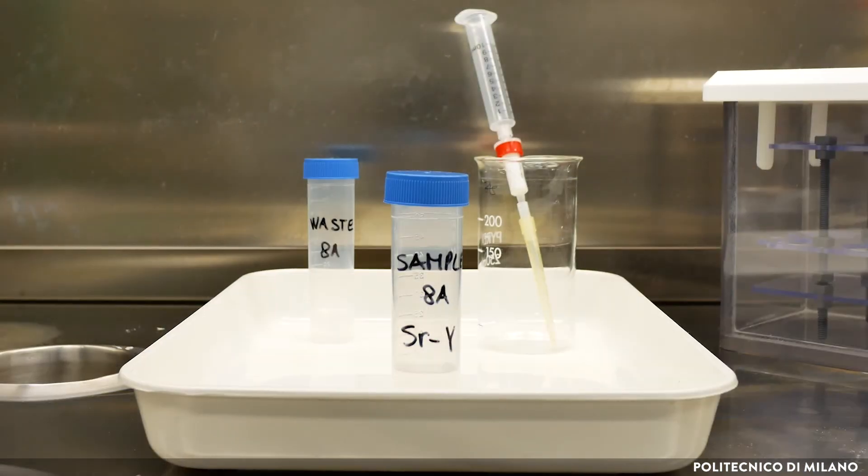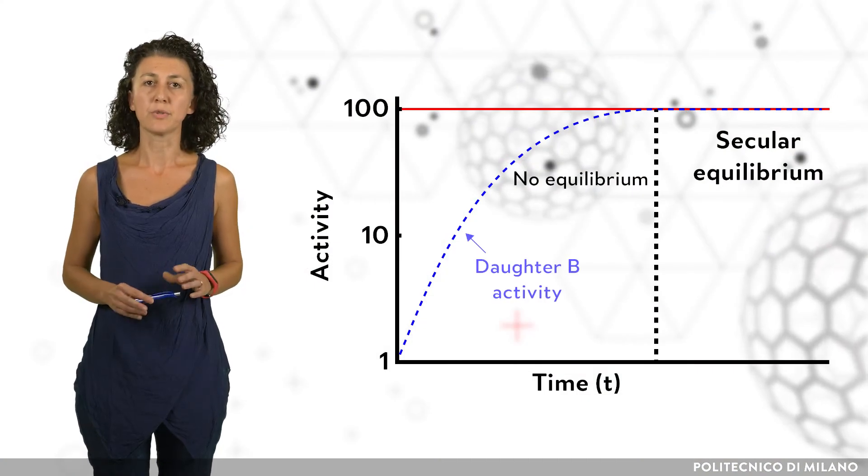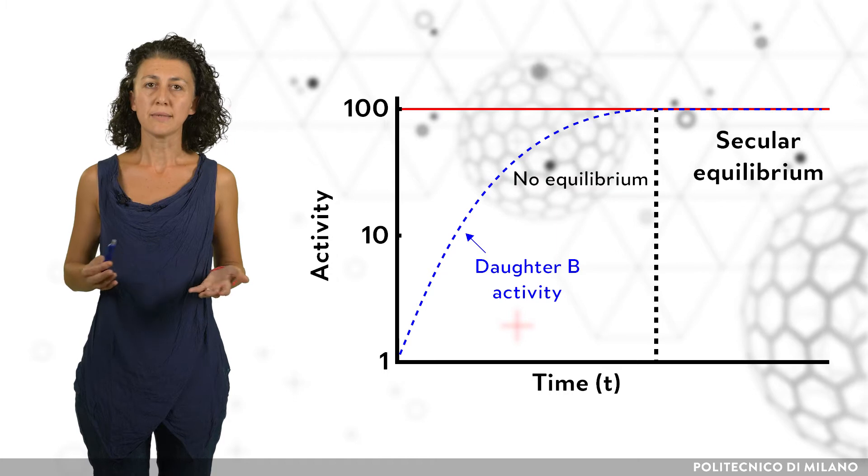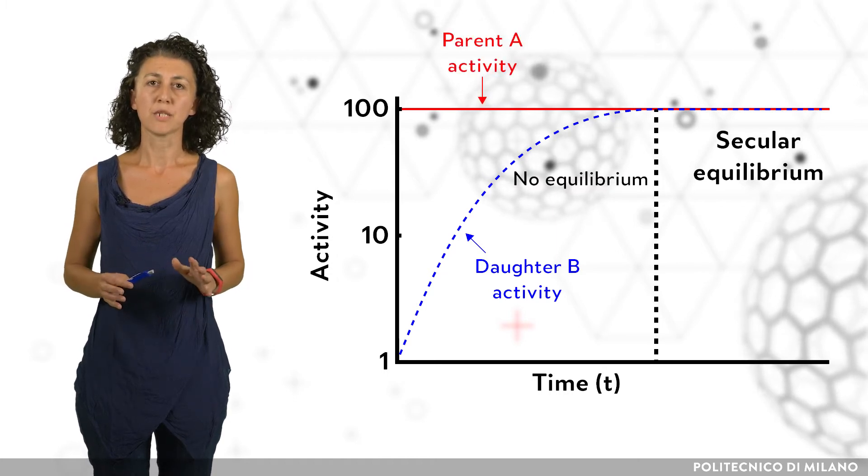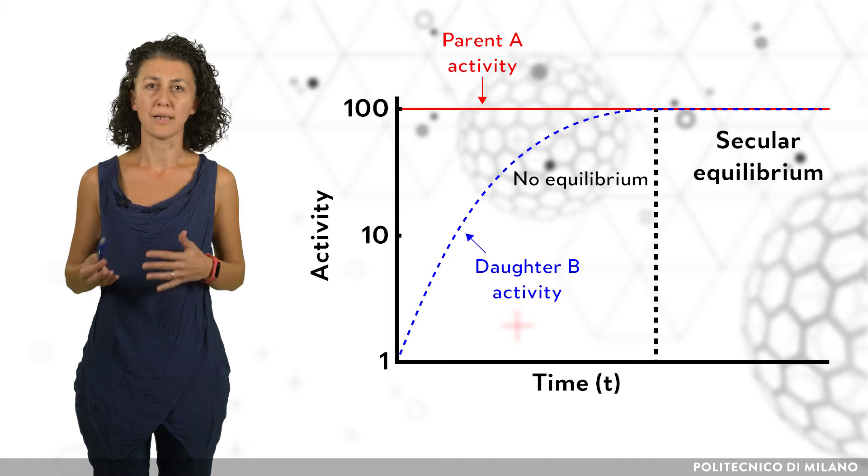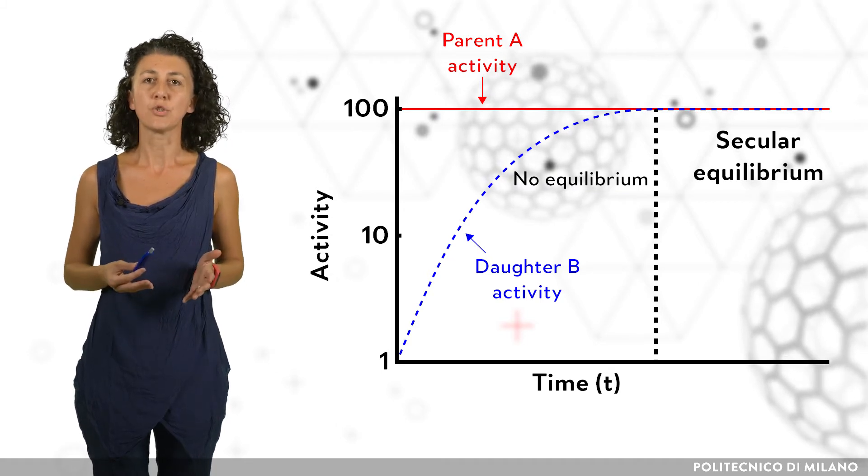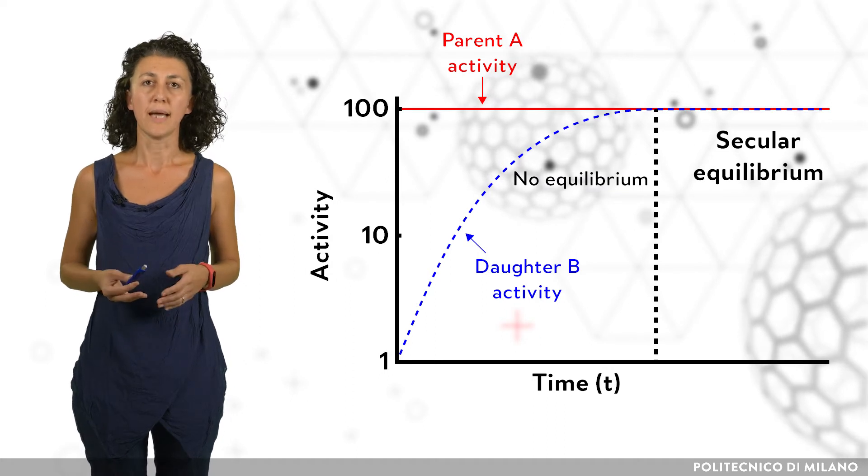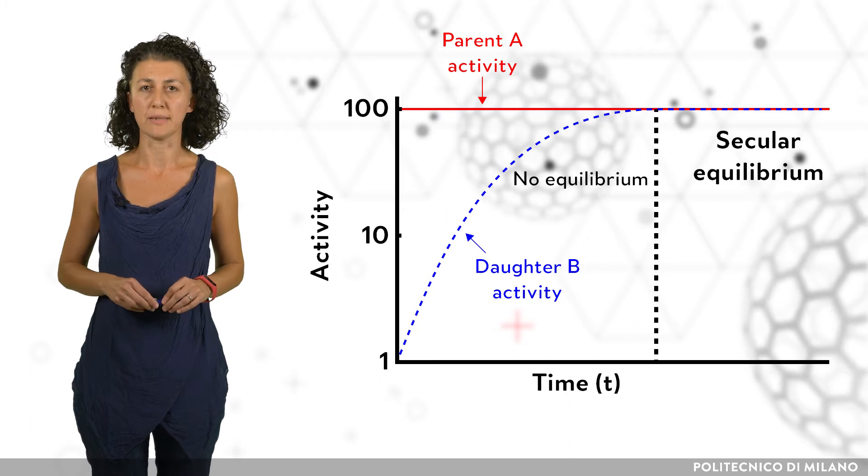After three weeks, strontium-90 and yttrium-90 reach the secular equilibrium, and the activity of yttrium-90 is equal to that of strontium-90. This enables the measurement of strontium-90 by isolating and counting yttrium-90. Secular equilibrium is where the activity of the daughter radionuclide B remains the same as the parent isotope A. After separation, the daughter radionuclide starts to grow with its half-life until it reaches activity of parent A, and afterwards it decays with the half-life of the parent A.